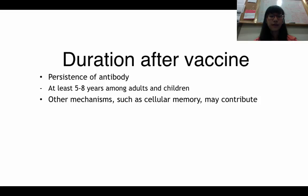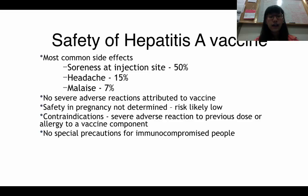Hepatitis A can definitely be prevented by vaccine. Antibodies can persist from 8 to 25 years among adults and children, and cellular memory can also contribute to long-term protection. The vaccine is generally safe with no severe adverse reactions. Safety in pregnancy has not been fully determined but risk is reasonably low. Common side effects include soreness at the injection site, headache, and malaise. Contraindications include a severe adverse reaction to a previous dose or allergy to a vaccine component, but there are no special precautions required for immunocompromised people. This is Jem on Hepatitis A virus — thank you for watching.